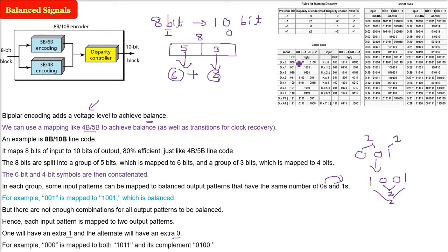Now you see here this is the map: 000 is mapped to two values - 1011 and 0100. These two are complements of each other. 0100 is nothing but the complement of 1011.